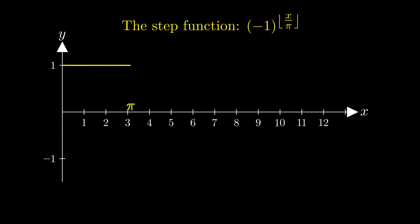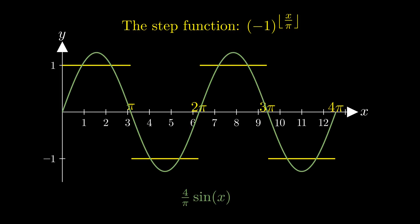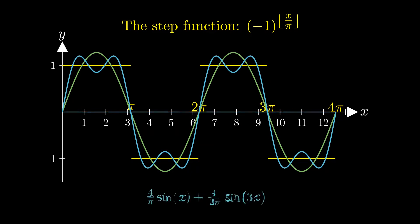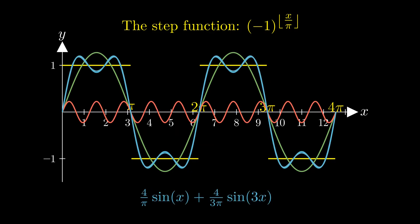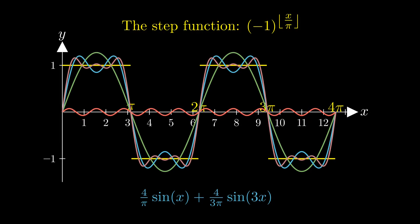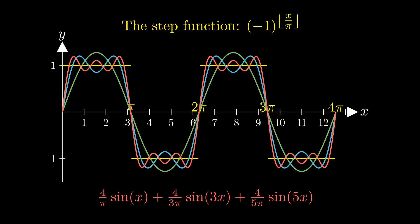Consider a function that jumps back and forth between plus and minus 1, positive from 0 to pi, negative from pi to 2 pi and so on. Along with this function, an appropriate sine function is plotted. When additional sine functions with higher frequencies and reduced amplitudes are added, the sum fits better. This process can be continued until there remains virtually no difference to the step function.